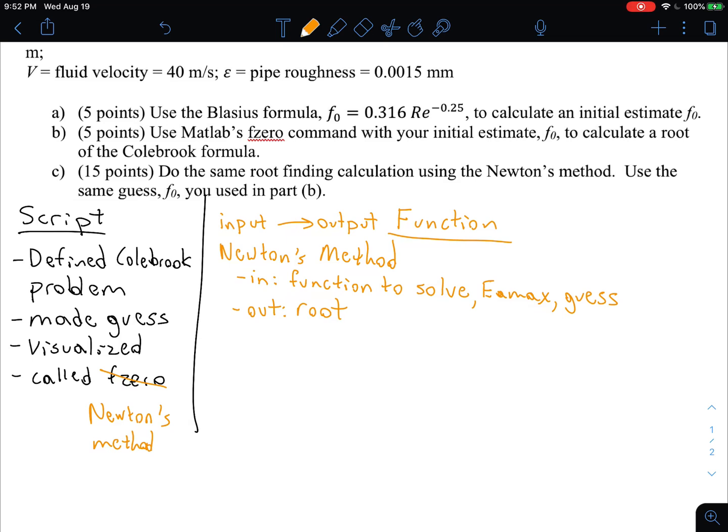We're going to need some components, some other functions for this problem. So one of them we've already defined, that the Reynolds number function. So that took the density, the velocity, the diameter and the viscosity. And it calculated a quantity that actually came into the definition of the problem. The Colebrook equation involves the Reynolds number.